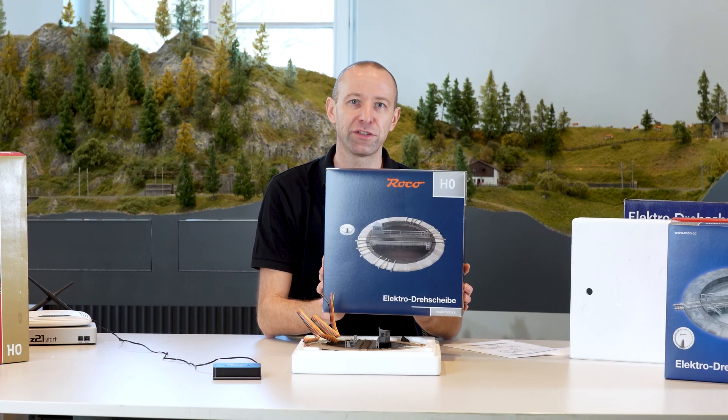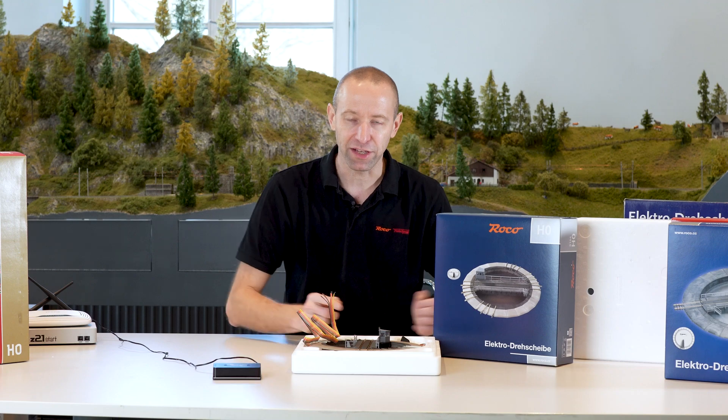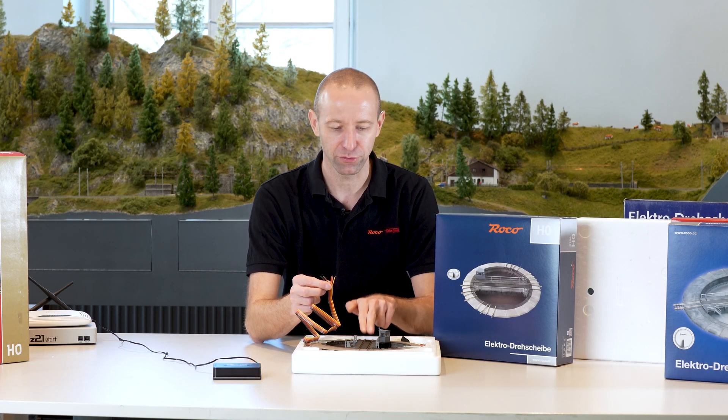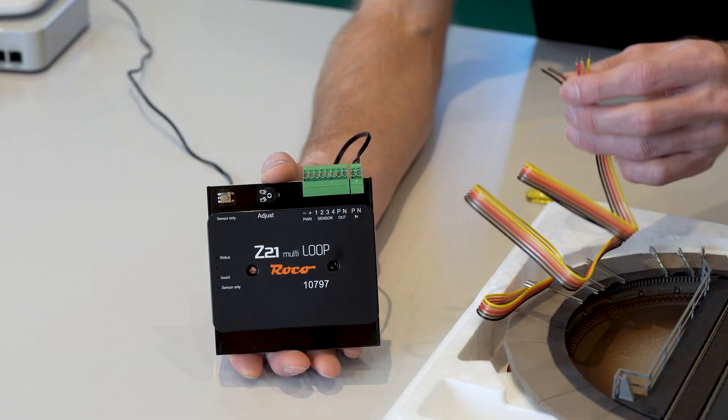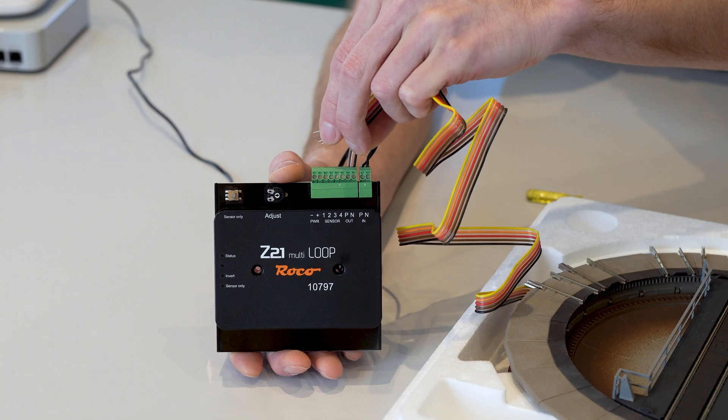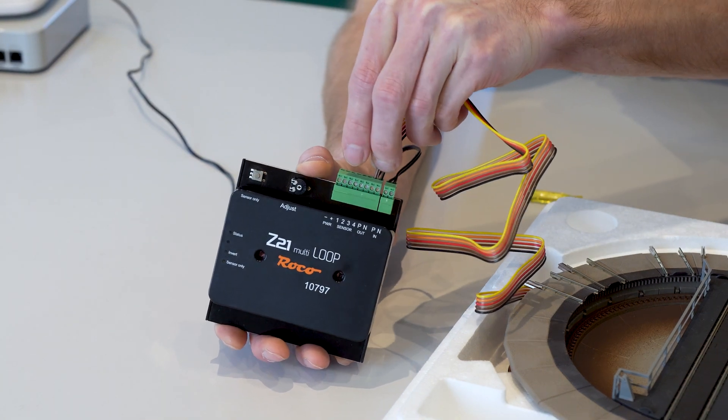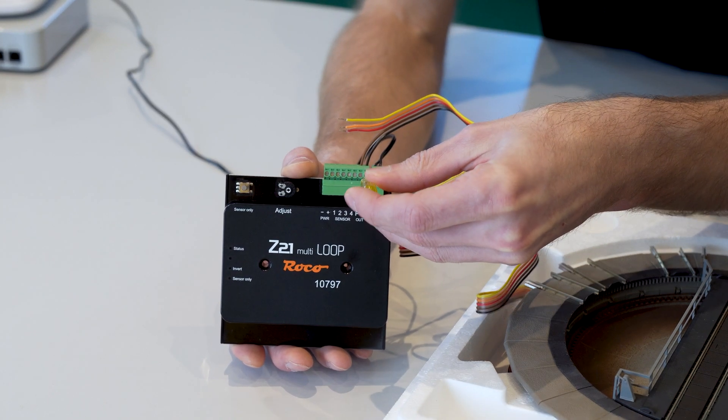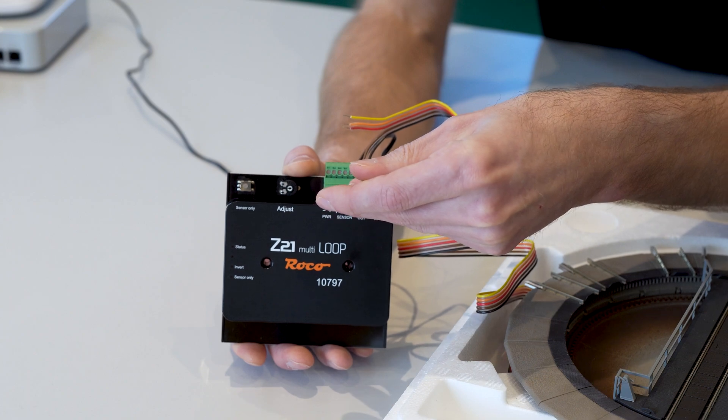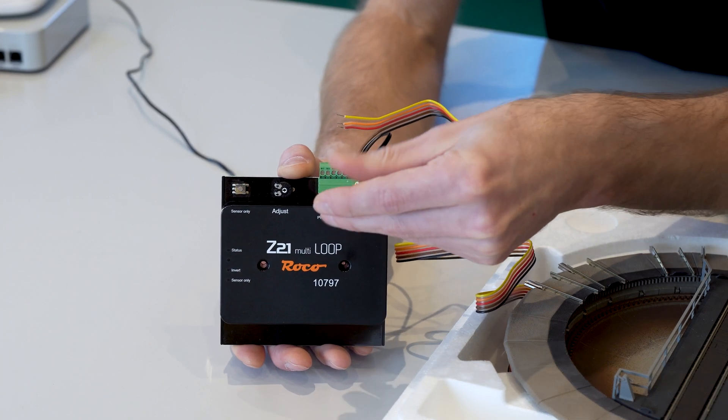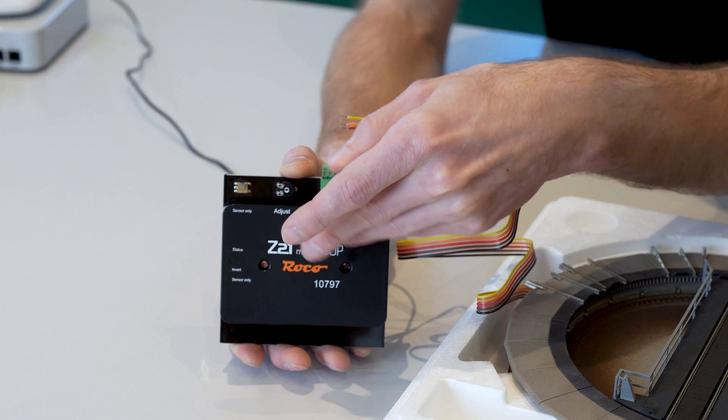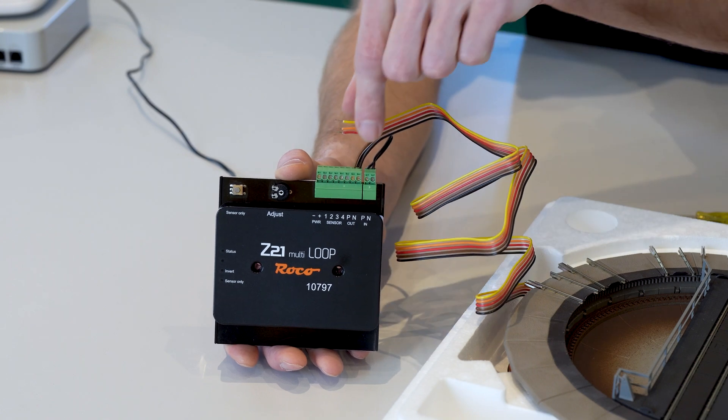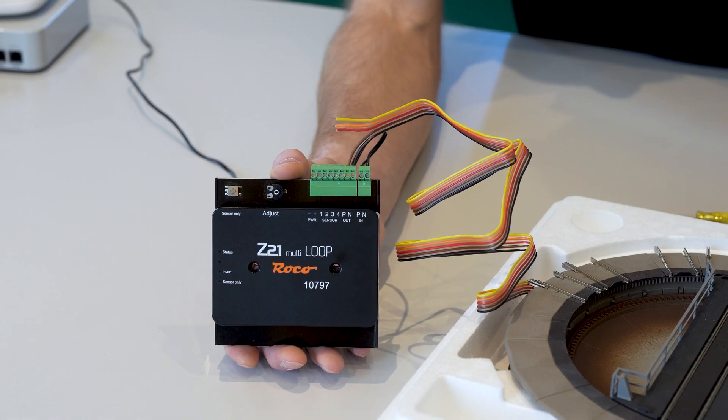With the new Roco turntable, the 6154, the cable colors are a bit different. You need the brown and the black cable here. These are the two cables for the platform power supply. We take the brown and black cables and connect them to the two inputs. Screw them tight one time. The turntable is now ready for digital operation and the other three cables are connected back to the handheld controller.